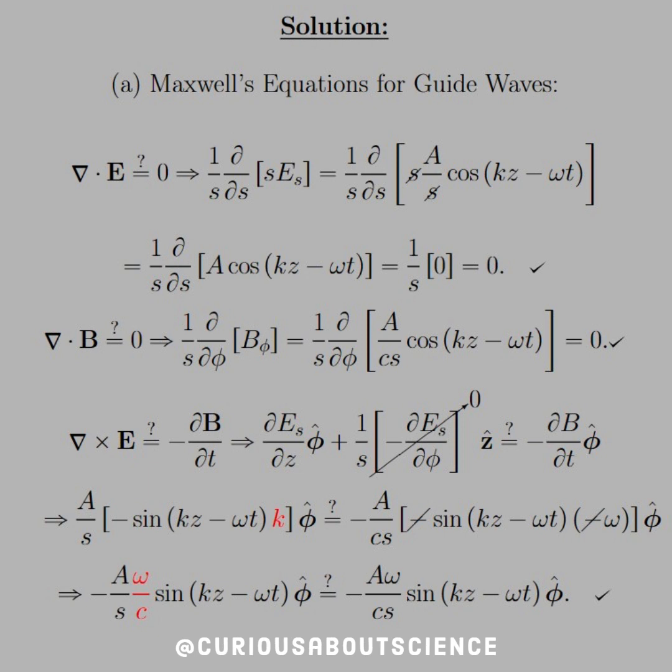So, the cylindrical divergence is 1 over s, partial s of s, e s component. So, if we plug the e s component in, we see that the s is canceled. Again, the spherical divergence and curls, or cylindrical, you don't need every component.